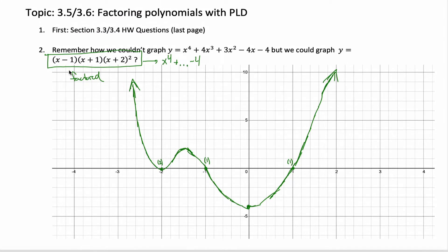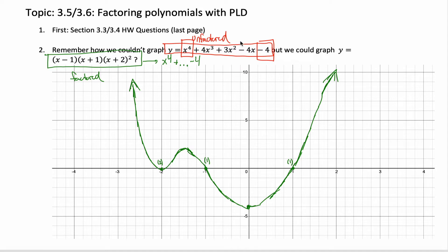The previous two sections were dedicated to taking the factored form of a polynomial and coming up with its graph. What we're doing in this section is making things slightly more realistic. Instead of starting out with the factored form, we're going to start out with the unfactored form. That's good news for the y-intercept and end behavior since we're already given the constant term and leading term, but we'll need to determine the x-intercepts — and to do that, we'll learn how to transform the unfactored form into the factored form.